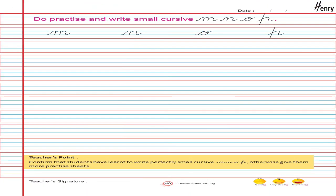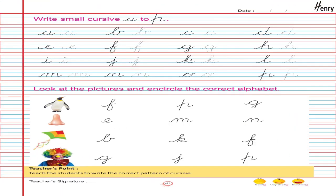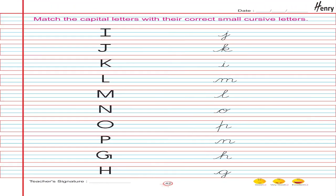Do practice and write small cursive M, N, O, P. Write small cursive A to P. Look at the pictures and encircle the correct alphabet. Match the capital letters with their correct small cursive letters.